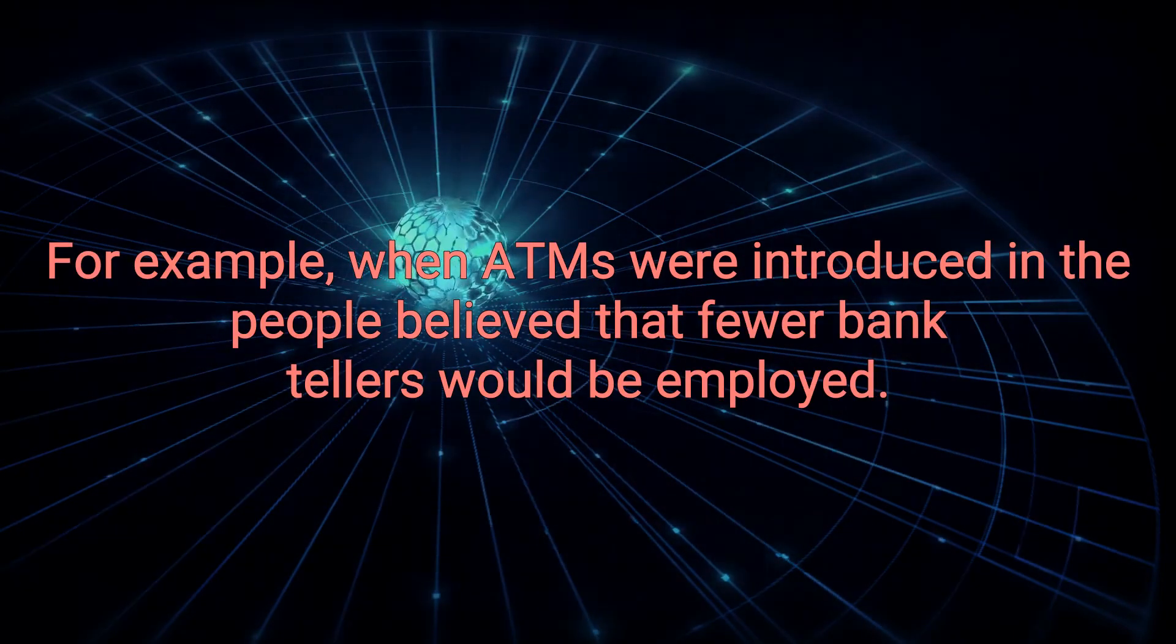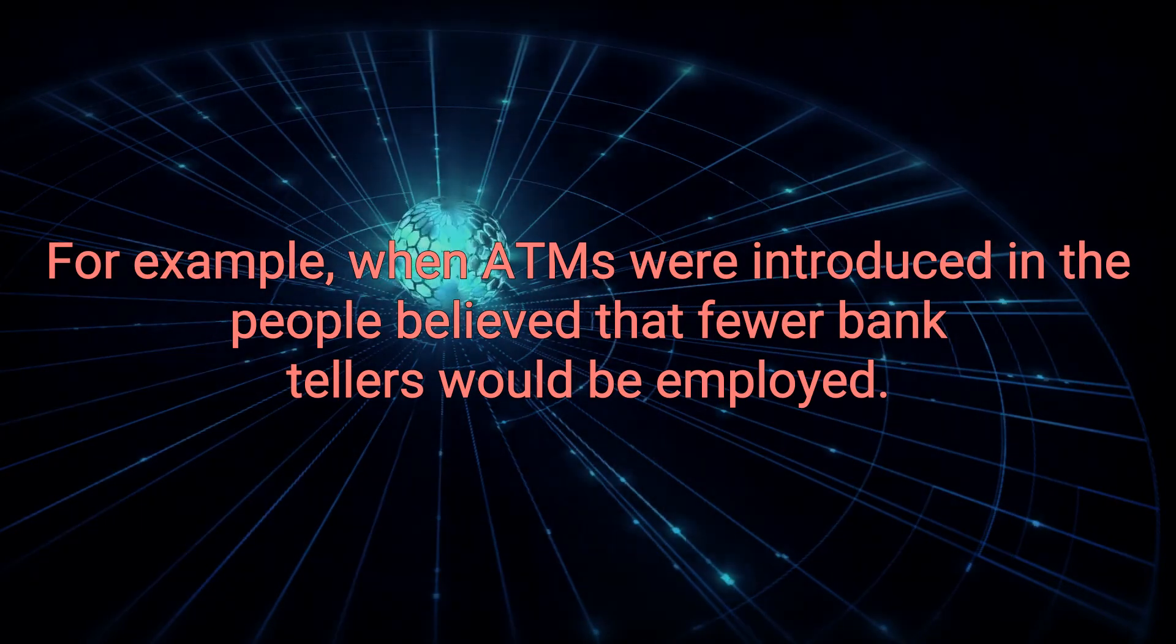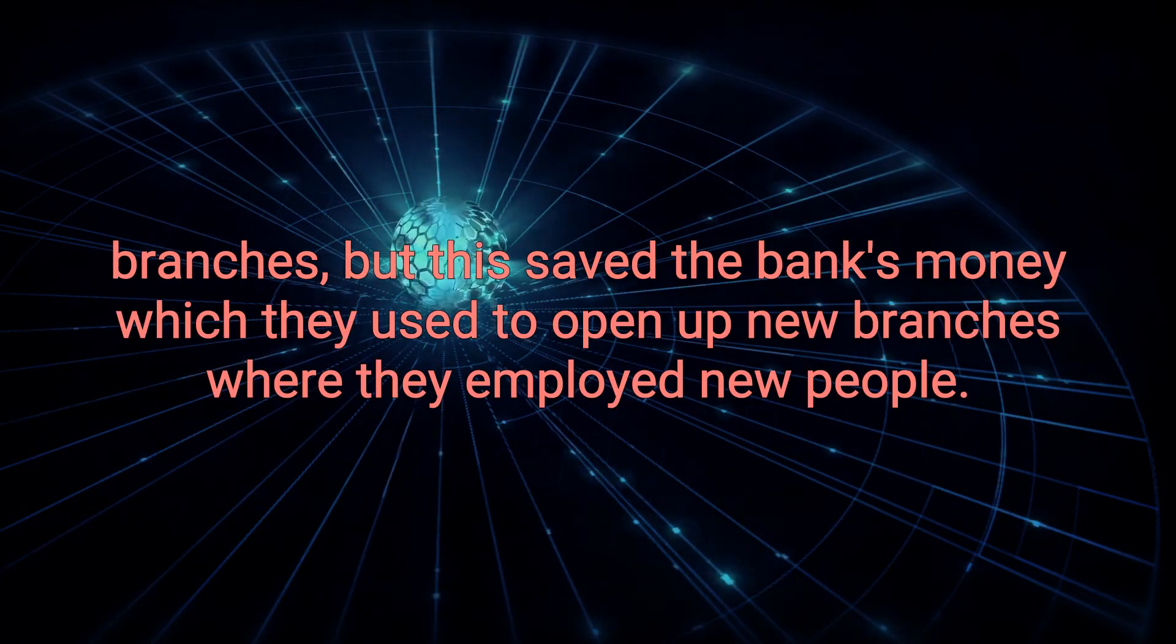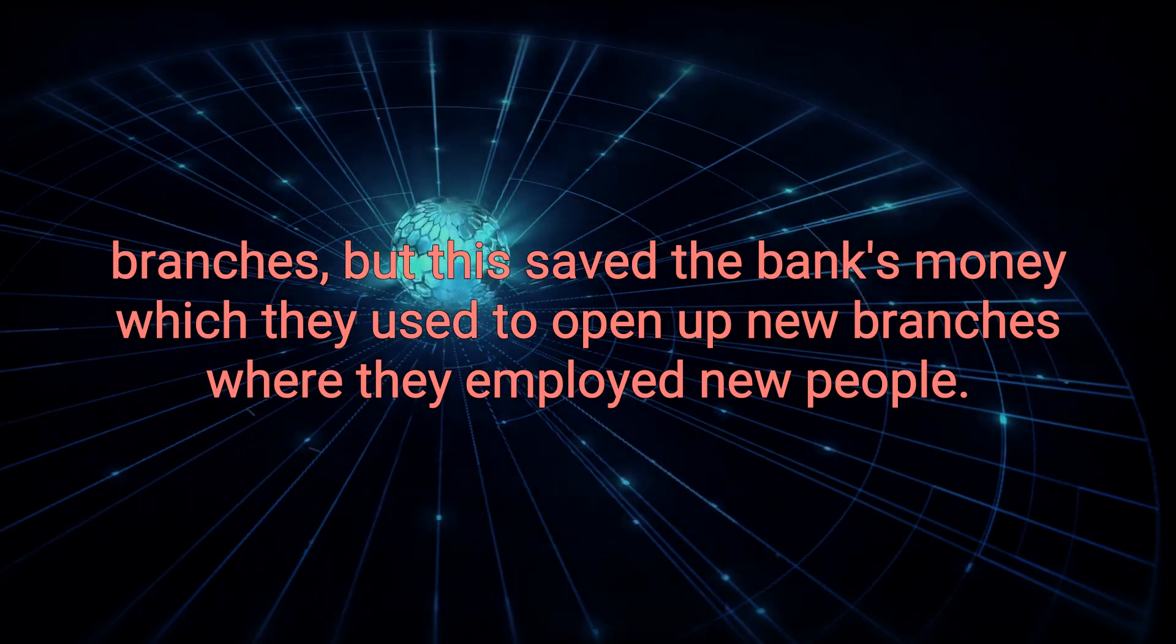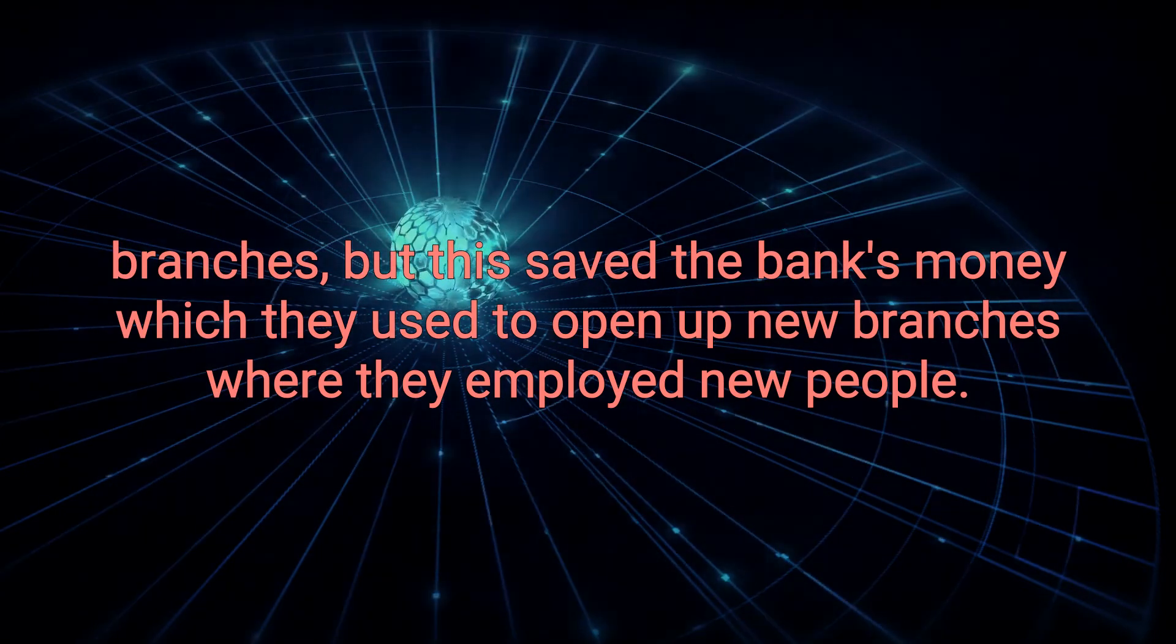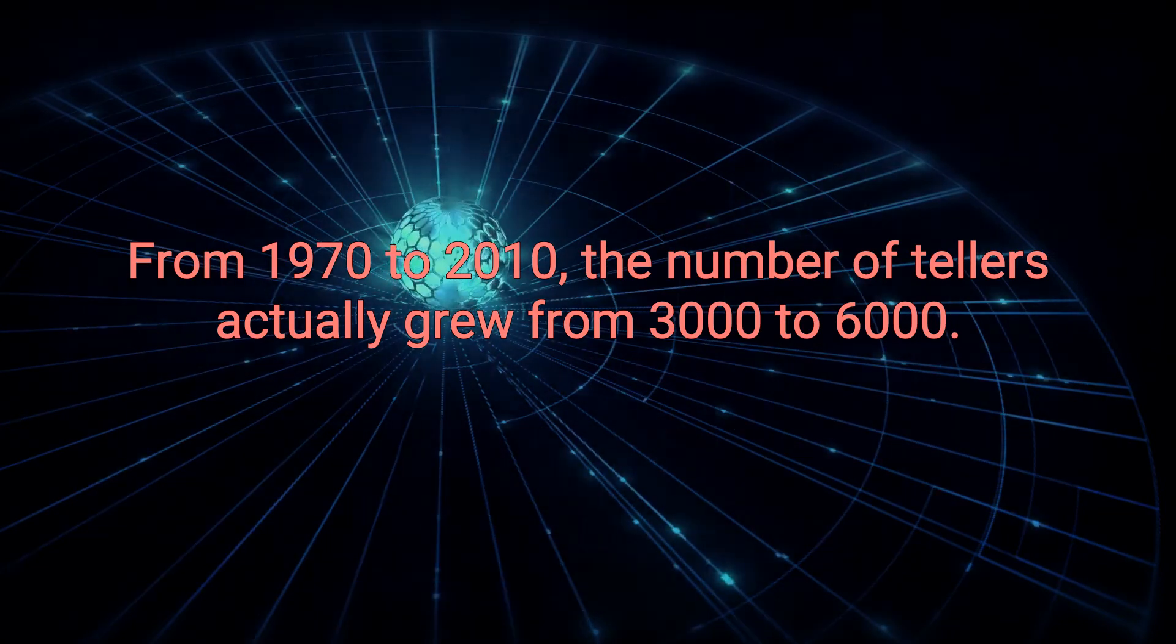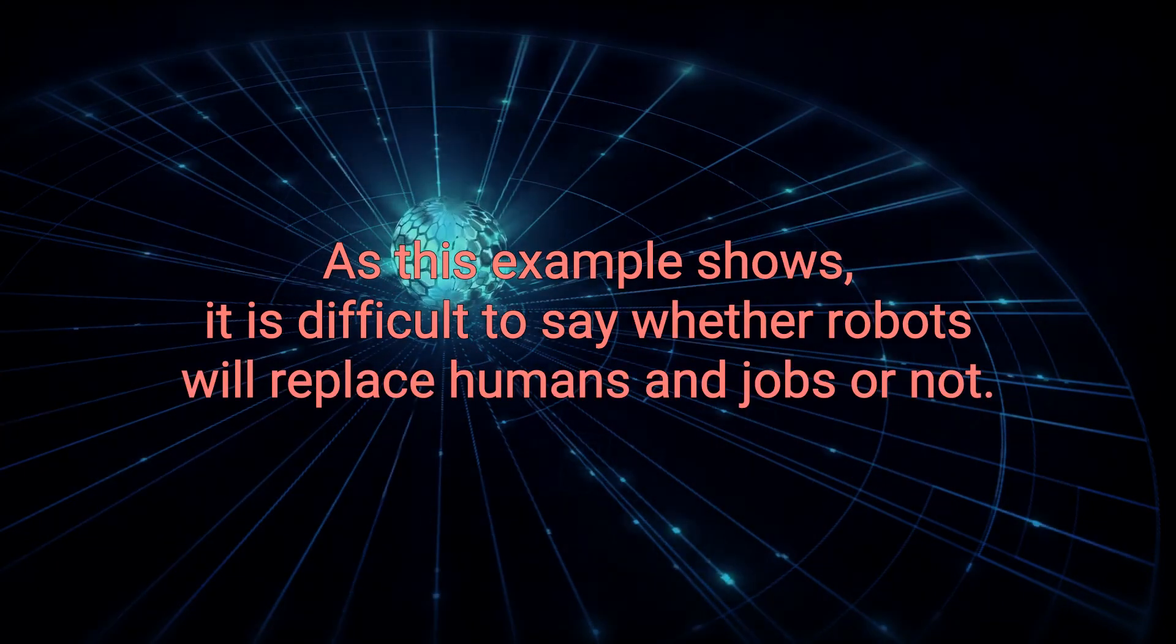For example, when ATMs were introduced in the 1970s, people believed that fewer bank tellers would be employed. Indeed, fewer human tellers were needed in bank branches, but this saved the bank's money, which they used to open up new branches, where they employed new people. From 1970 to 2010, the number of tellers actually grew from 300,000 to 600,000.